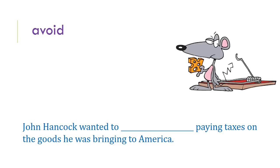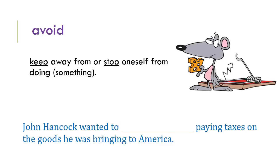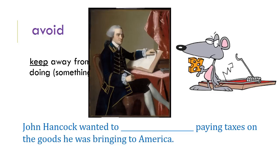Your next word is avoid. Avoid means to keep away from or to stop oneself from doing something. You can see a little mouse avoiding a mousetrap. We can use this in different ways — maybe avoiding sweets or avoiding television to get more studying done. John Hancock wanted to avoid paying his taxes on the goods he was bringing to America. He was very wealthy and would have paid a lot of taxes on imports, so he tried in every way possible to avoid paying — sometimes using illegal methods.